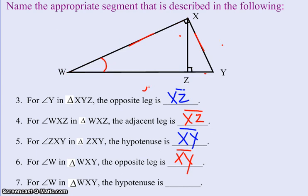And then finally, problem seven again wants the perspective of angle W in triangle WXY. So we're looking at the big triangle WXY. They want to know the hypotenuse. Well, like I had just said, triangle WXY is the big one. The 90-degree angle is here, so the hypotenuse will be the side opposite it, so it looks like it will be WY.